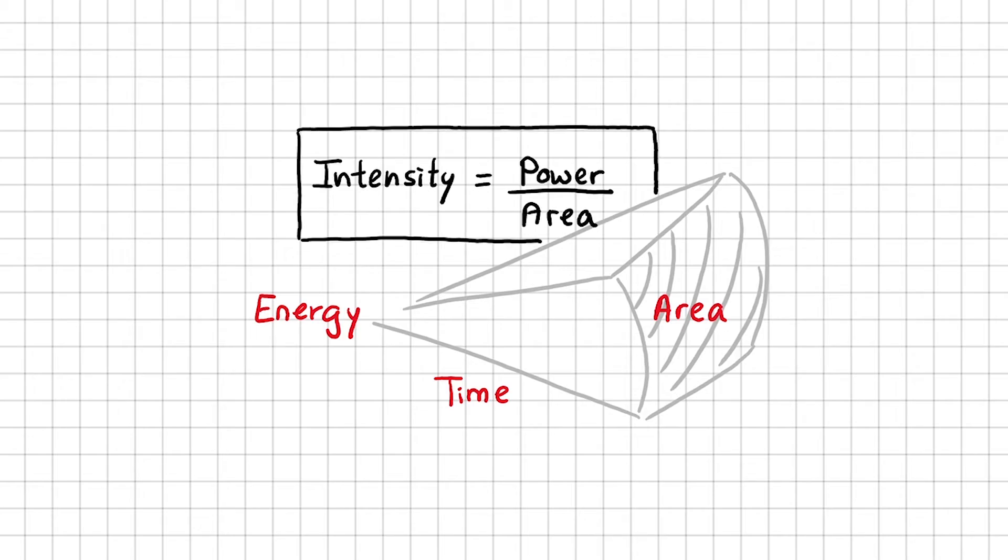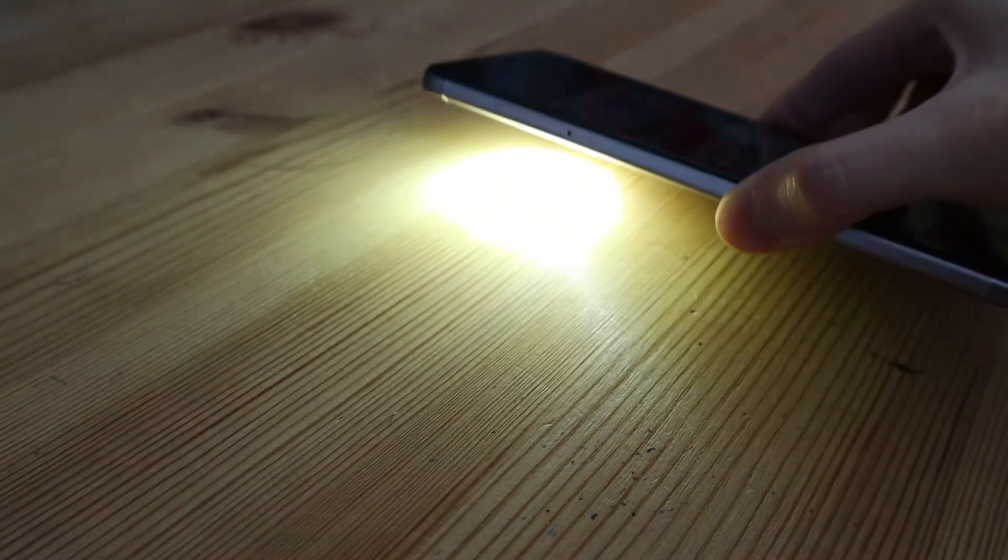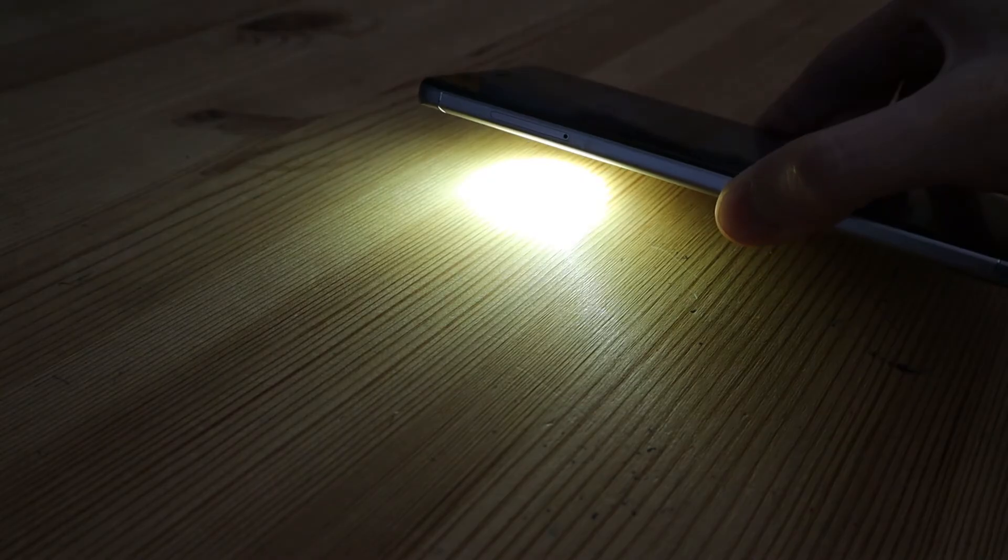To demonstrate this, you can take a light source and point it at a wall. The light energy is radiated over a certain area. But if I pull the light source away from this wall, the energy is now spread over a larger area.